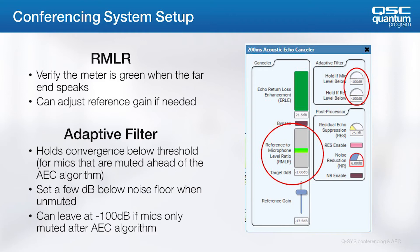As previously stated, it's a good idea to mute any conferencing mic signals in the DSP after the AEC processing block. That would be the first choice, but sometimes the AV designer doesn't have that option — for example, if the microphone audio comes from a Dante-enabled microphone without a way to get a mute signal back to Q-SYS. Q-SYS has at least one option to accommodate this scenario: the Hold If Mic Level Below setting holds the AEC convergence when the mic audio level goes below the set threshold. If this is set just a few decibels below the noise floor of the mic when unmuted, the algorithm will hold through the mute state and have less work to do when unmuted again.